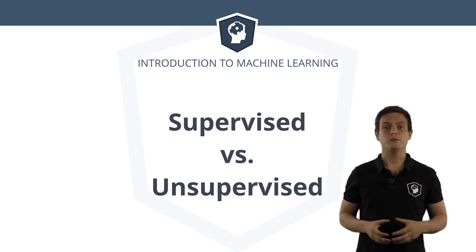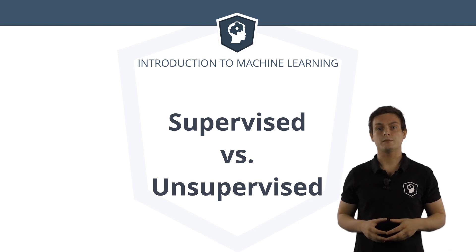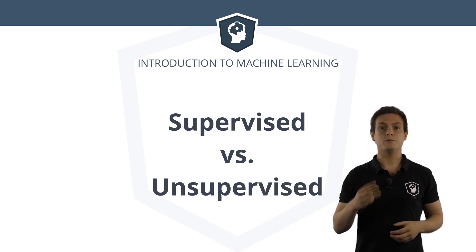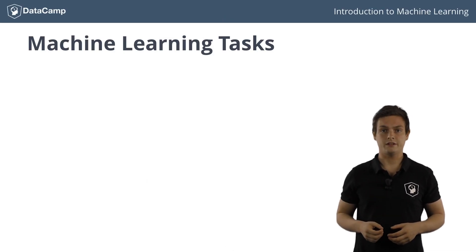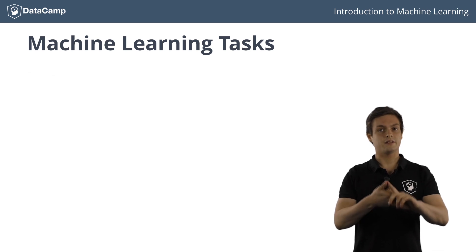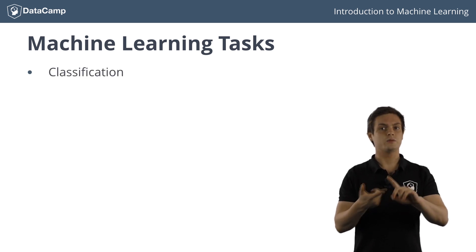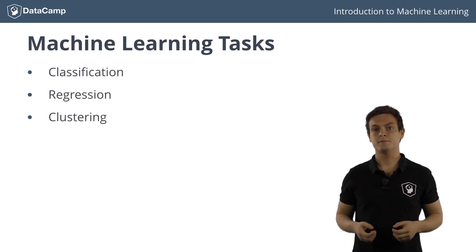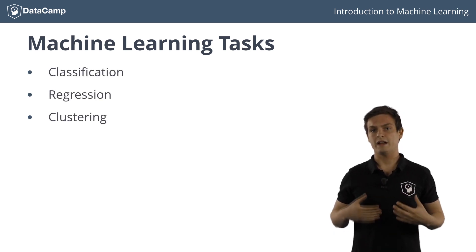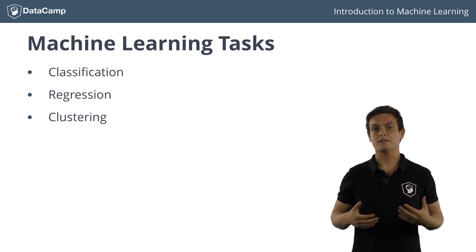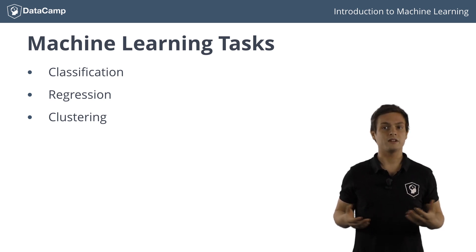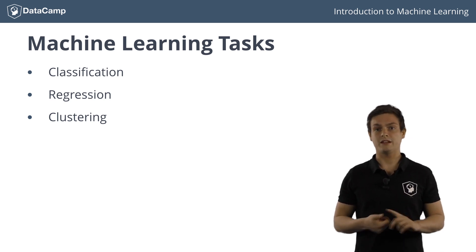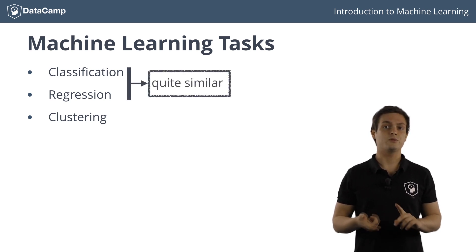In a previous video, you learned about three machine learning techniques: classification, regression, and clustering. As you might have felt, there are quite some similarities between classification and regression.